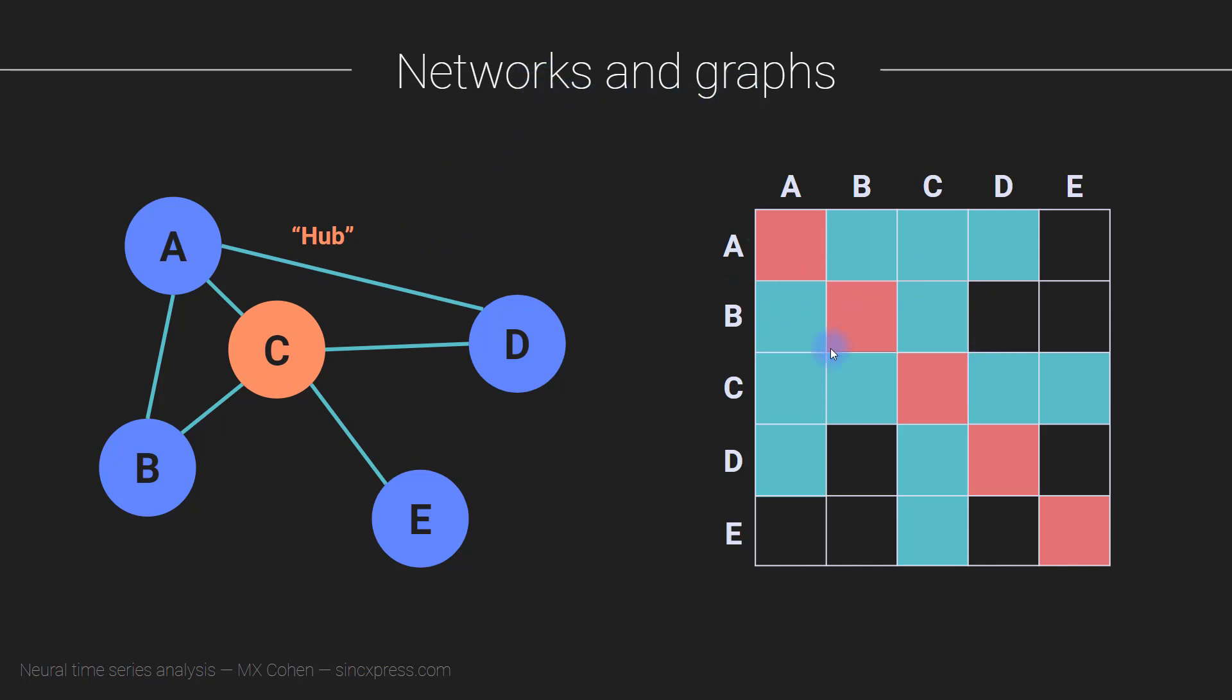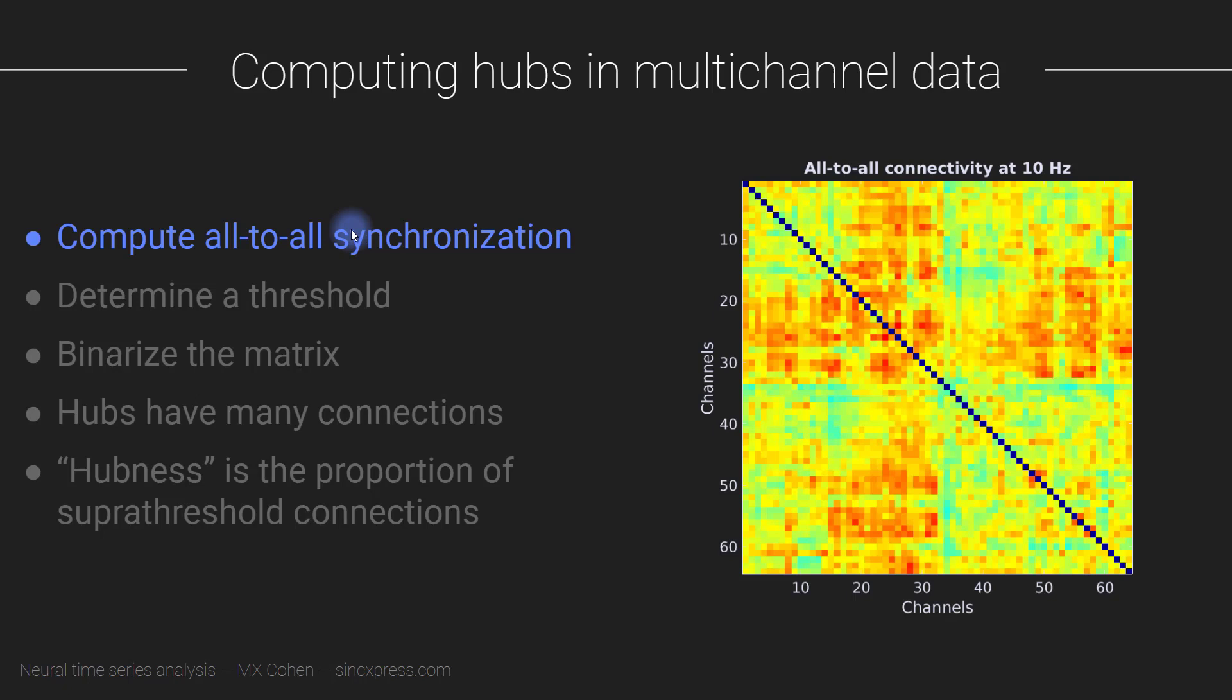Now I'm going to relax the definition of a hub from a binary definition where we say a node is or is not a hub, to something called hubness where each node has some measure of hubness. The measure of hubness would be small for E, kind of medium for D, and largest for C.